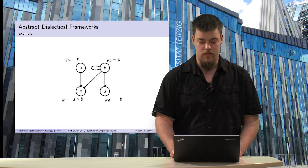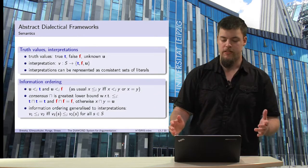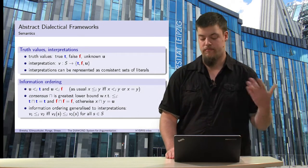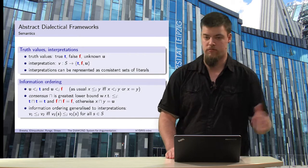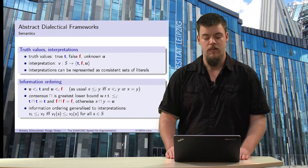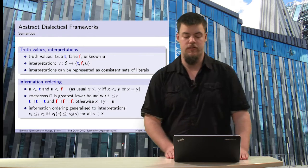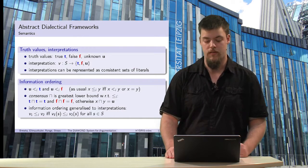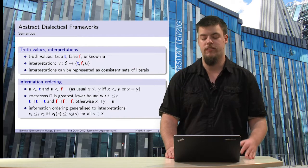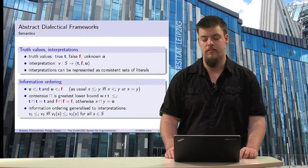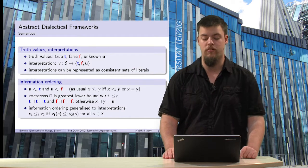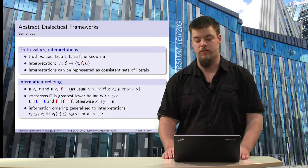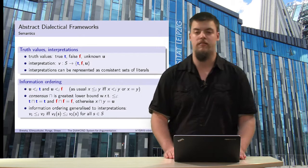Now we go to the semantics. We need to define semantics to find extensions — so-called interpretations or models — for abstract dialectical frameworks. For this, we use a three-valued logic with truth values true, false, and unknown. An interpretation is a function mapping from the set of statements to these three truth values, and can also be represented as a consistent set of literals. We can establish an information ordering: true has more information than unknown, and false has more information than unknown, while true and false are not comparable to each other.